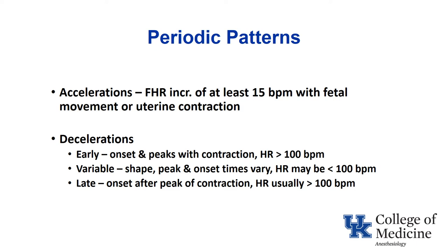Variable decelerations are exactly as described — with each contraction they look different in terms of depth, duration, and onset speed. They can be quite deep, and it's common to see heart rate drop below 100 beats per minute. Late decelerations don't begin until after the peak of the contraction. Like early decelerations, they usually don't drop very deep — heart rate usually stays above 100 beats per minute. This can make differentiating early from late decelerations tricky, though it's important because they represent two very different clinical situations.